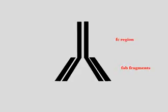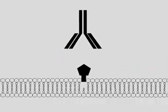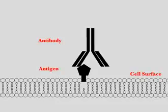An immunoglobulin G antibody consists of a constant FC region and two variable Fab fragments. The paratope, or antigen binding site, exists at the edge of the Fab fragments. An antibody binds selectively to the target antigen via attractive forces between the paratope of the antibody and epitope of the antigen.